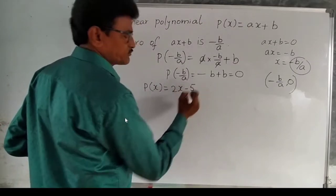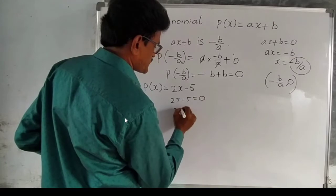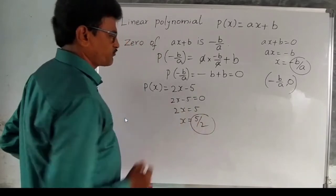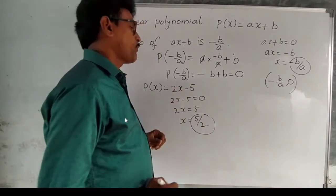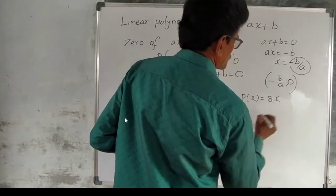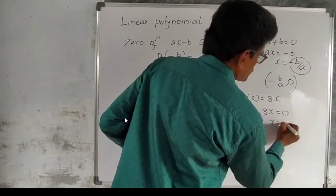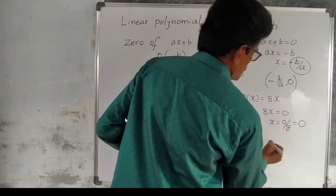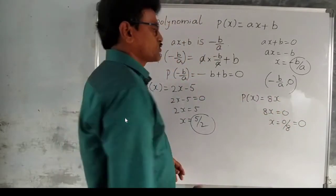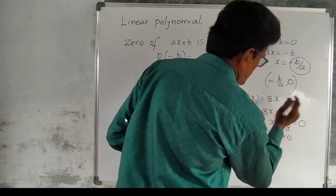Suppose p(x) = 2x minus 5. To find the zero, put 2x minus 5 = 0, so 2x = 5, giving x = 5 by 2. So x = 5/2 is the zero. Another example: if p(x) = 8x, put 8x = 0, so x = 0. Zero is the zero of this polynomial — substituting x = 0 gives 8 × 0 = 0.